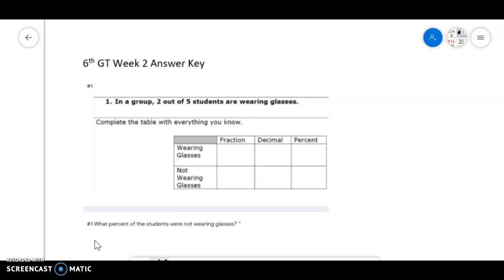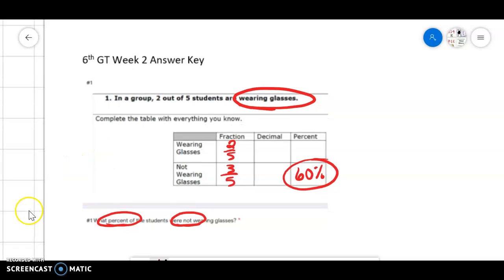The biggest mistake we had here was reading for details. This told us that we had a group of two out of five are wearing glasses, but then the question asked not wearing glasses. So that means three out of five are not wearing glasses and they wanted that as a percent. We know that three-fifths is 60%. A lot of you did tell me 40% there.